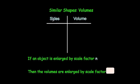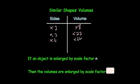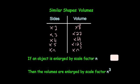Let's summarize: if we make the sides two times bigger, the volumes are 8 times bigger. If we times the sides by 3, the volume is 27 times bigger. If we times by 4, the volume is 64 times bigger. Notice: 2 cubed is 8, 3 cubed is 27, 4 cubed is 64. So if we were to make the sides five times bigger the volume would be 125 times bigger. If we times by n for the sides, the volume would be n cubed. The definition is: if the object is enlarged by scale factor n, then the volumes are enlarged by scale factor n cubed.